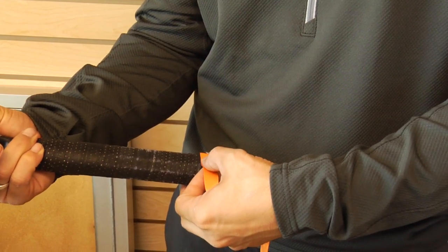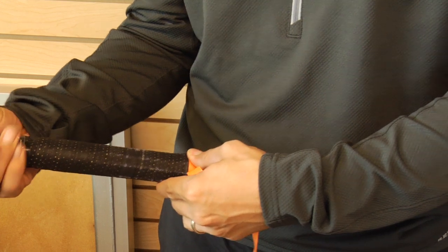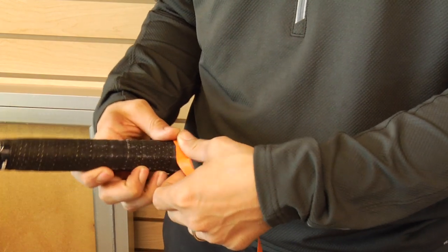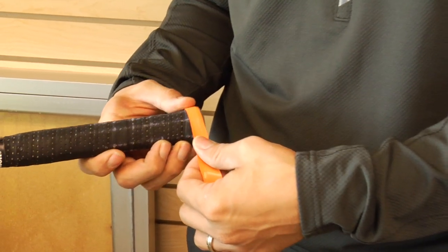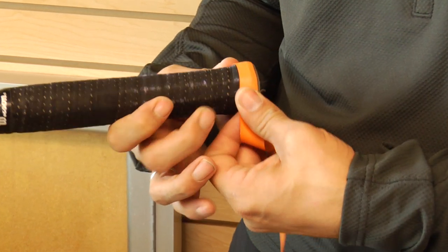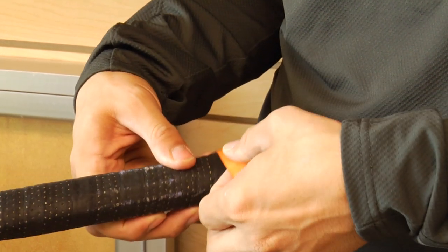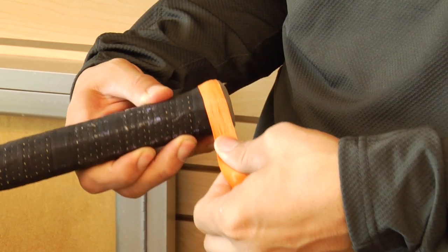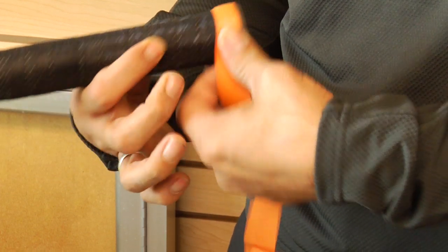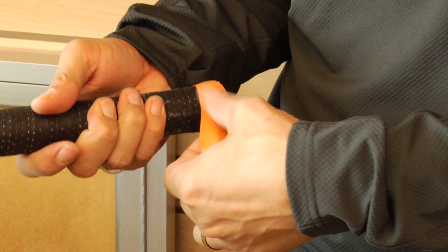So you're going to start off at the base of the handle. Go ahead and place that there. Keep it nice and taut. You don't want any wrinkles in your grip. Wrinkles will tend to mess up your grip.